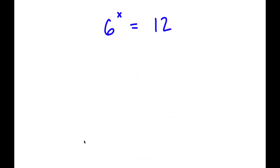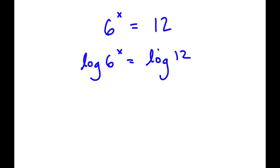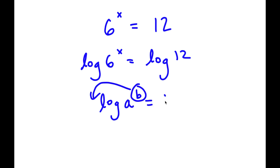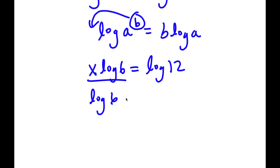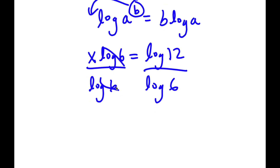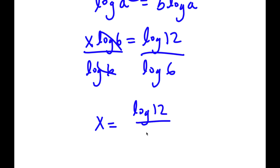In this problem, I have 6 to the power of x is equal to 12. To solve this, I'm going to take the log on both sides. So now I have log of 6 to the power of x equals log 12. Using the power rule, log of 6 to the power of x equals x times log 6, which equals log 12. To solve for x, I divide both sides by log 6, giving x equals log 12 over log 6.